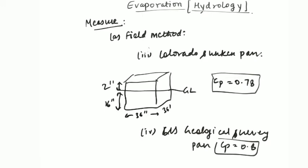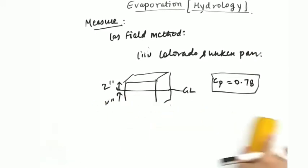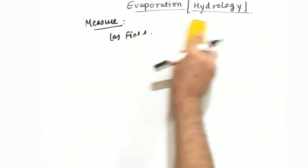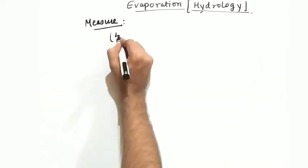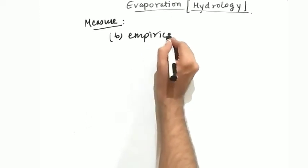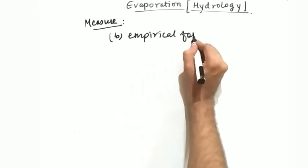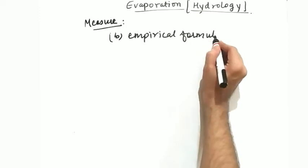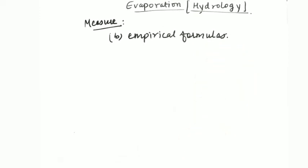The second method that is used to measure the evaporation is empirical method. Now what are the empirical methods? We use some fixed formulas that have no derivation. We use these empirical formulas.